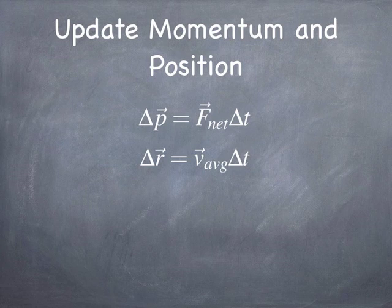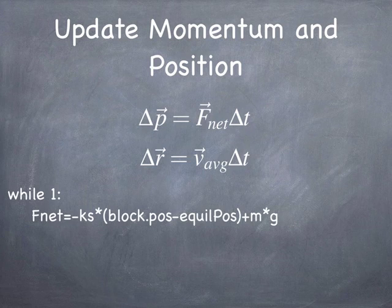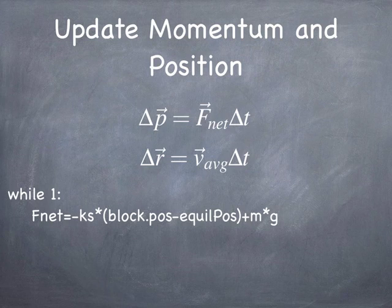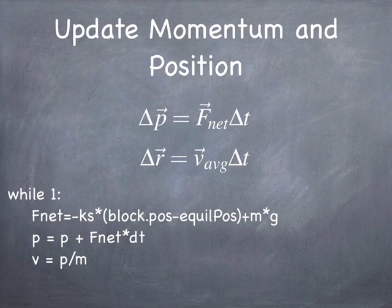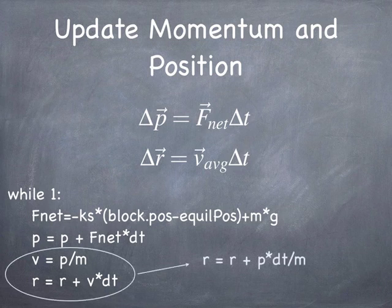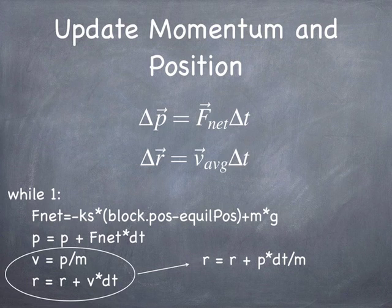Central to this are the update principles for momentum and position. The basic code computes the net force by calculating the displacement of the end of the spring from its equilibrium position and multiplying by the spring constant, then adding the weight — the mass of the block times the gravitational field strength. Then we update the momentum, recalculate the velocity as momentum divided by the mass, and update the position. You can actually replace computing the velocity explicitly — just compute the updated position as the momentum times the change in time divided by the mass, skipping an independent velocity calculation.